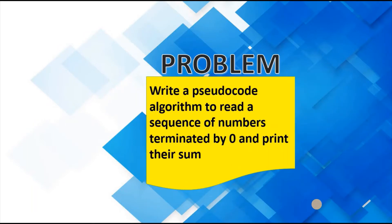The first problem is to write a pseudocode algorithm to read a sequence of numbers terminated by zero and print their sum. Normally the problem would tell us how many numbers we expect to receive from the user, but for this problem we were not given that amount, so we are not sure how many times the set of instructions will be repeated. What we do know is that once the number zero is entered, the program would be terminated, and we are expected to print the sum of all numbers entered.